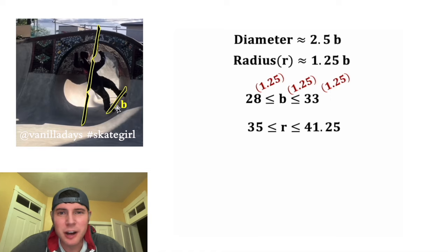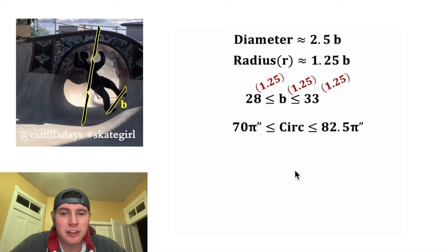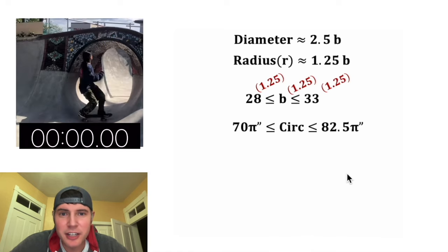Next I want to know the circumference of the circle. So if we multiply this middle by 2π, we'll have the circumference in the middle, and whatever we do to the middle we have to do to all three. 35 times 2π is 70π, r times 2π is 2πr, and 41.25 times 2π is 82.5π. And this 2πr is the same thing as the circumference, so let's change this to circumference.